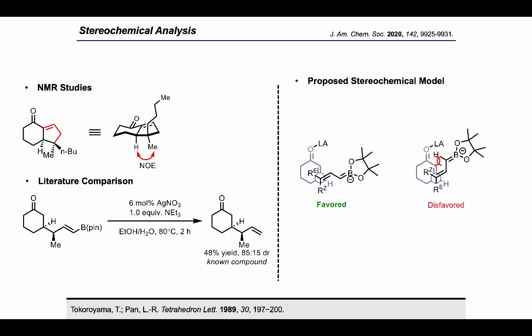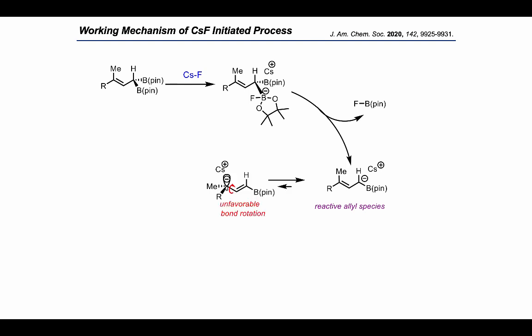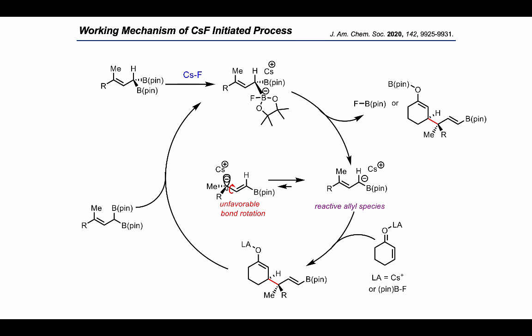Addition via the opposite face of the nucleophile appears to be disfavored due to sterics. With this data, we propose a working mechanism of the cesium fluoride-initiated conjugate addition, where deboronative activation of the allyldibo­ron results in the generation of a reactive allyl species. We hypothesize that stereochemical fidelity is retained, as isomerization would require an unfavorable sigma bond rotation shown here. Allylcarbanion addition to an enone, activated by either the boronate or a cesium bridge between the boronate oxygen and the carbonyl, would allow for stereoselective bond formation, and another equivalent of allyldibo­ron may engage with the enolate to continue the process.